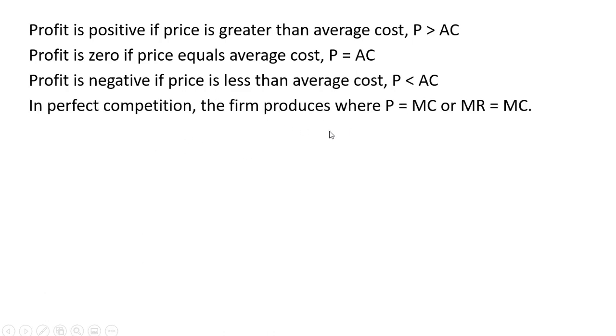In perfect competition, the firm produces where price equals marginal cost, or marginal revenue equals marginal cost. That is a profit-maximizing condition where the price is determined in the marketplace.